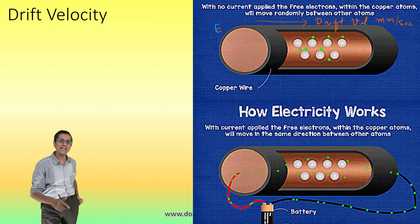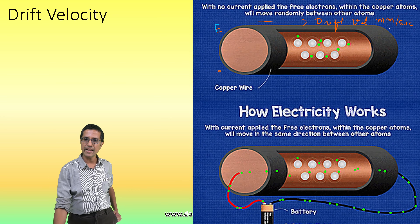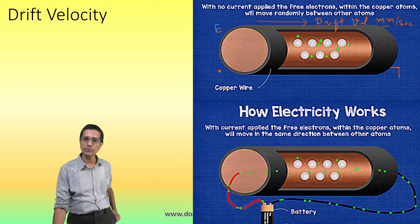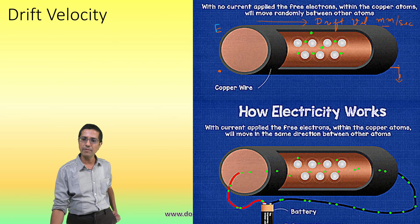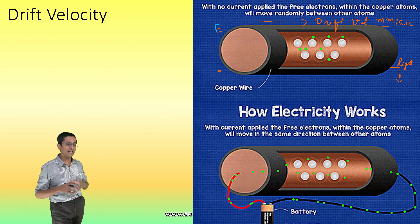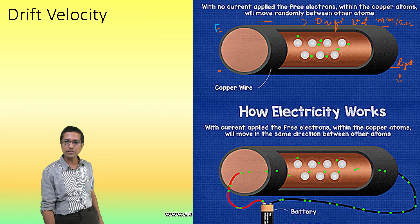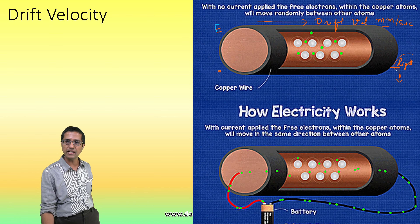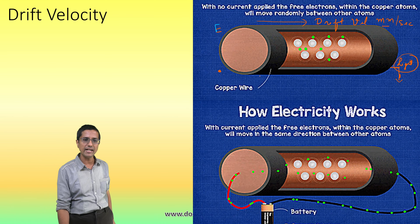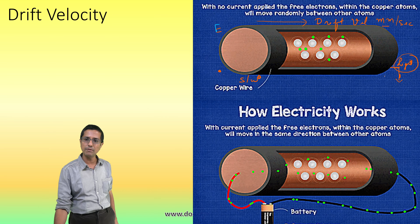As soon as I apply the electric field — meaning I turn on the switch — the drift velocity is actually small, and it would take a while for the electrons to drift to the other end where my light bulb is. So if electrons were travelling at drift velocity and those were responsible for turning on the light bulb, it would take a while for them to go from the switch end to the light bulb end.